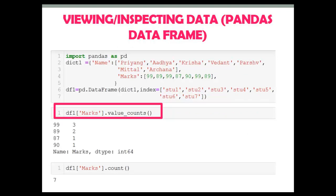Next, value_counts. The value_counts function is used to get the counts of unique values. The resulting object will be in descending order so that the first element is the most frequently occurring element. For example, 99 is the most frequently occurring element in our DataFrame — 99 occurs 3 times, 89 occurs 2 times, 87 occurs 1 time, and 90 occurs 1 time.